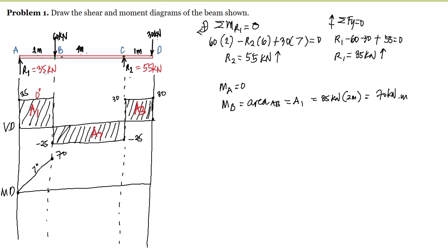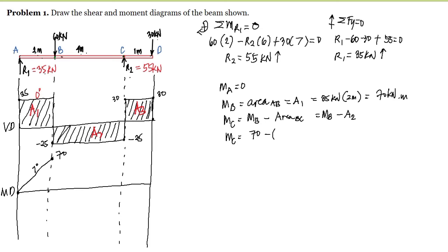Since Area 2 is negative, the moment at point C equals the moment at B minus the area between B and C. Moment at C equals 70 kN·m minus Area 2: 25 kN times 4 meters equals 100, giving us negative 30 kN·m. Since the shear in segment BC is degree 0, the moment diagram is again degree 1 — just a straight line.